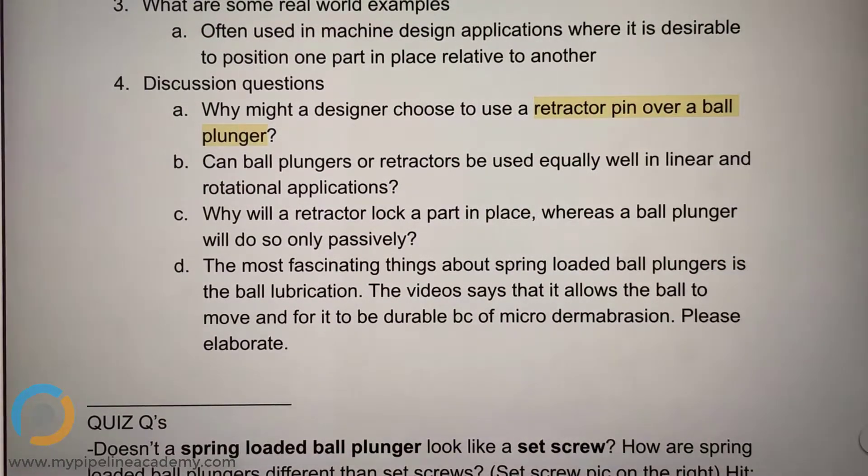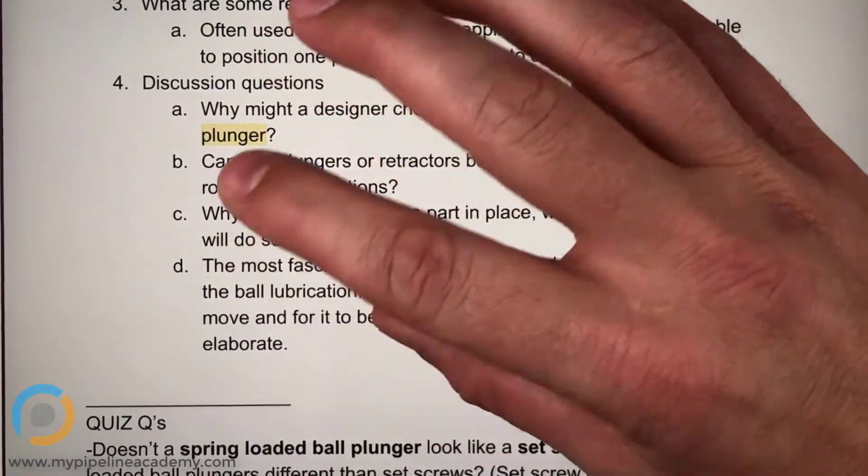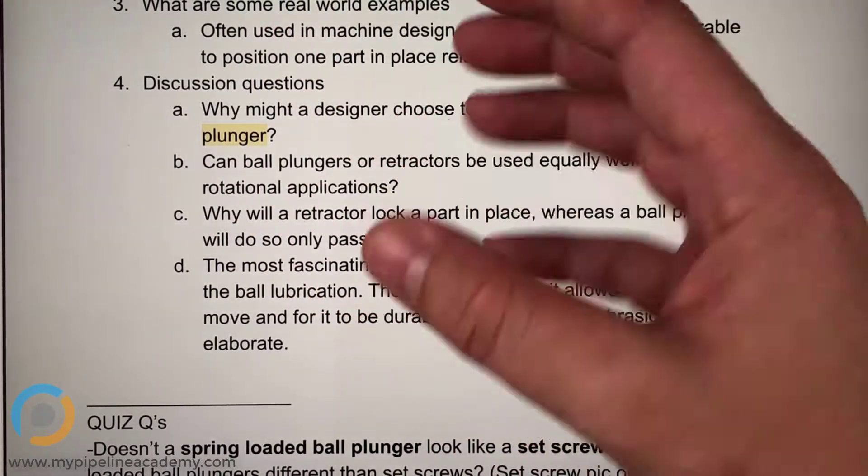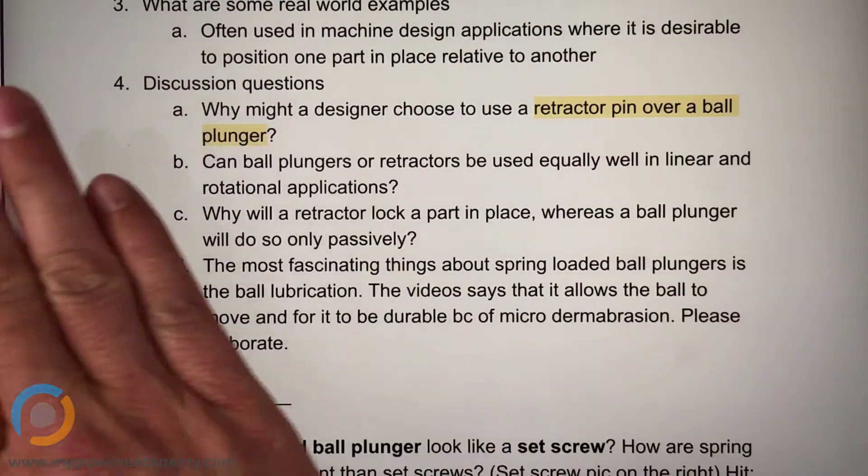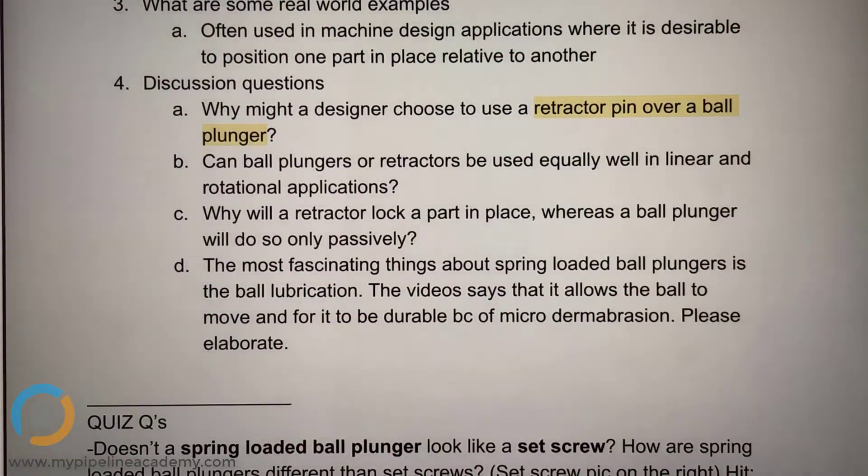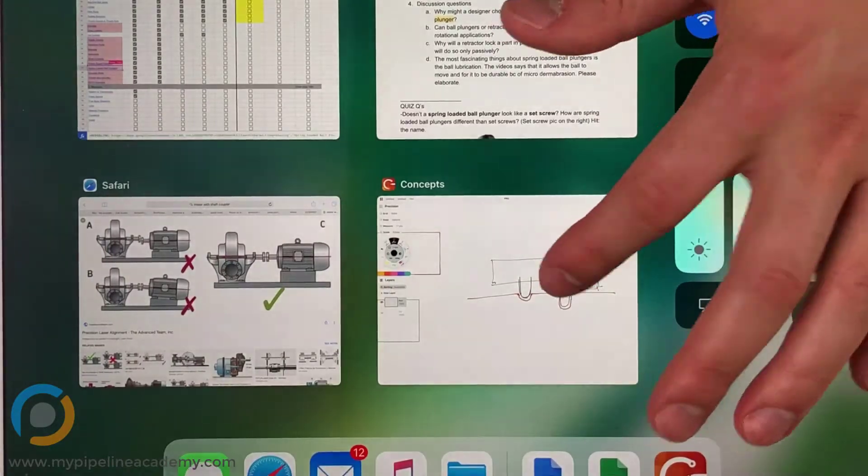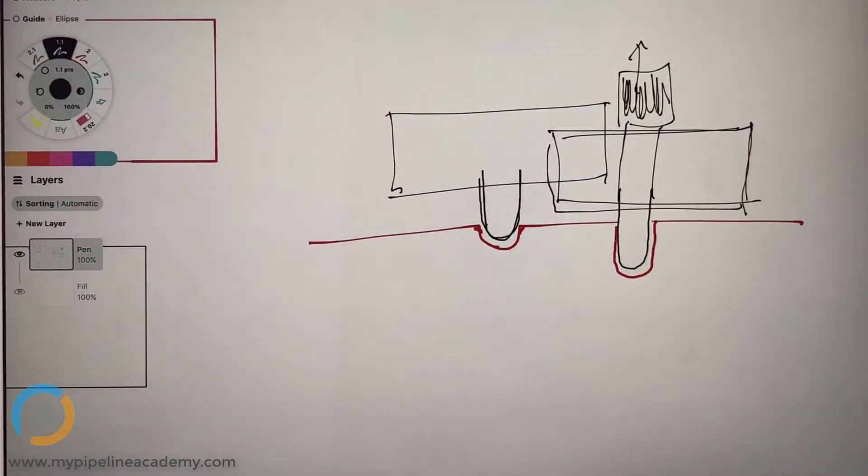Can ball plungers or retractors be used equally well in linear and rotational applications? Rotational applications means that the ball rolls inside? No. I was referring to applications in which you have something rotate versus applications where you have something move linear, just back and forth. So this is an example of linear.